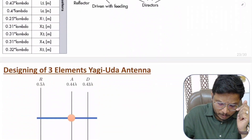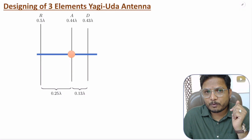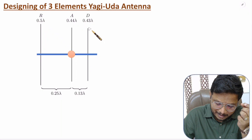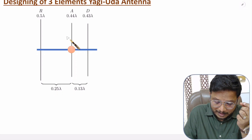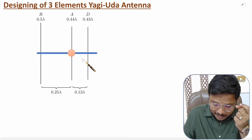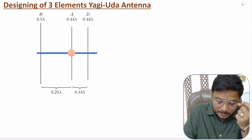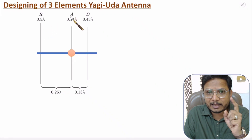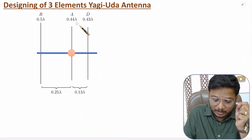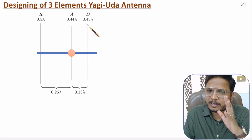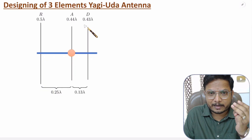Now I will explain one more design — a three-element Yagi-Uda antenna. We simply have three elements: an active element, a director element, and a reflector element. The spacing between the active element and reflector element is 0.25 lambda. The director and active element spacing is 0.13 lambda. The reflector has a length of 0.5 lambda, the driven element has a size of 0.44 lambda, and the director element has a size of 0.43 lambda. By these dimensions, you can easily design a three-element Yagi-Uda antenna.